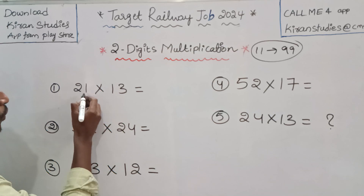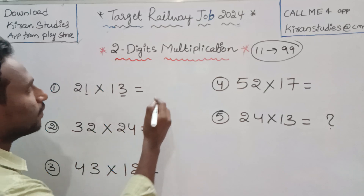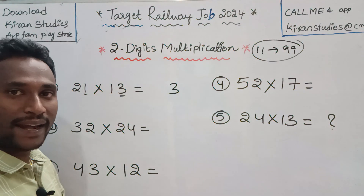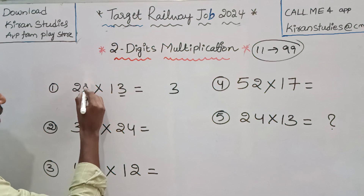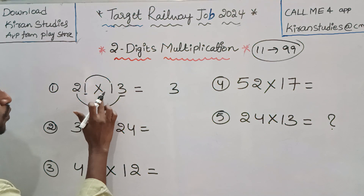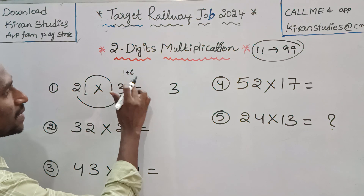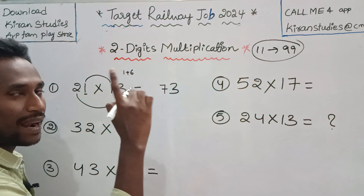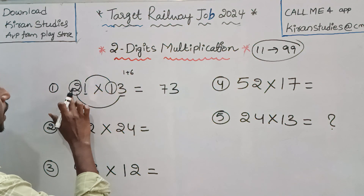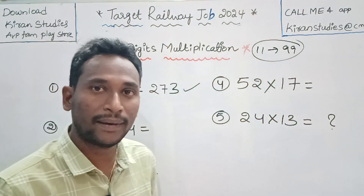We have two-digits multiplication, so we multiply the two last numbers. So 1 into 3 is 3. If we carry one thing, the next step is the middle numbers. In the middle, we have the two last numbers: 1 into 1 is 1, 2 into 3 is 6, so 1 plus 6 is 7. The last step is we multiply the first numbers: 2 into 1 is 2. So the answer is 273.